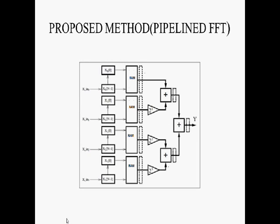This is the proposed method diagram. The X is the input. I am using a 4-input sequence, where N indicates the length of the filter. I am taking the input from 0 to N-1, so 4 inputs are taken. From this, the data is transferred to RAM, which is the temporary storage.